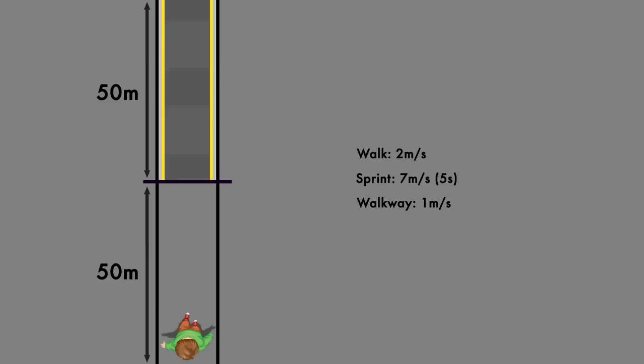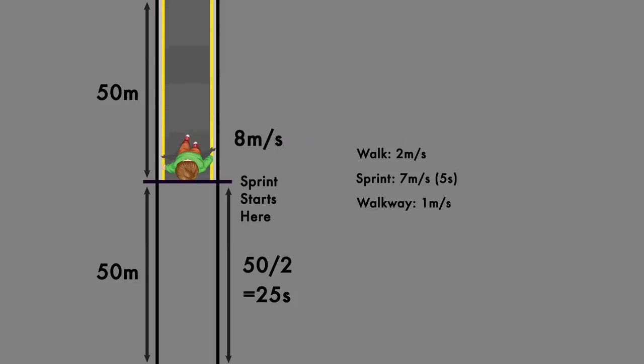Let's first analyze a person who will sprint only on the walkway. This means they walk the first 50 meters, and at 2 meters per second that will take 25 seconds. Once they get to the walkway and start sprinting, their speed will be 8 meters per second relative to the ground, or the sprinting speed plus the walkway speed.